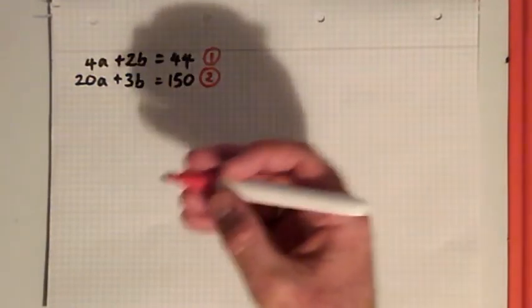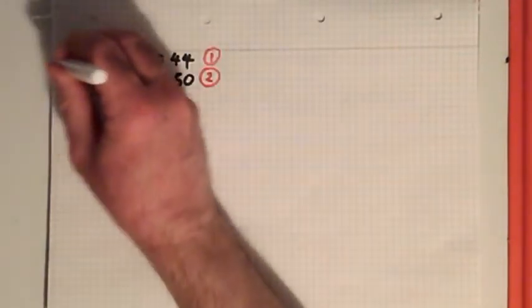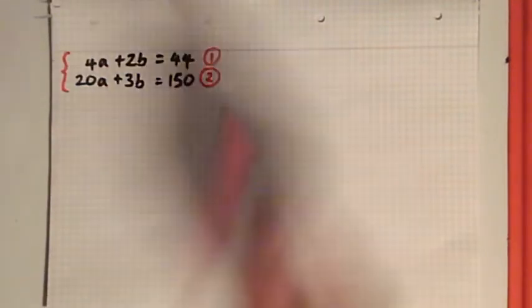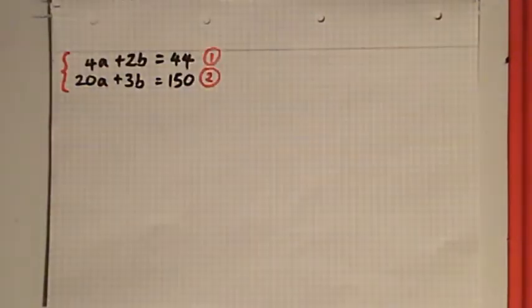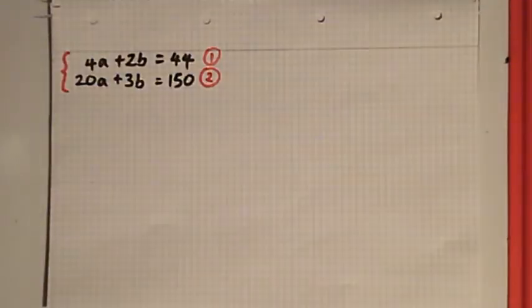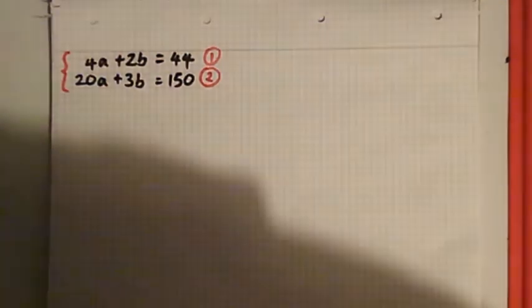But what we're looking for with simultaneous equations is a pair of values that works in both equations together at the same time. Simultaneous is why it's called simultaneous equations.